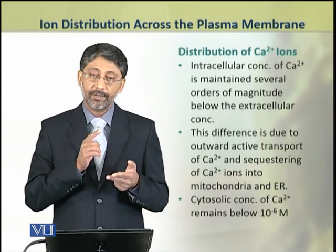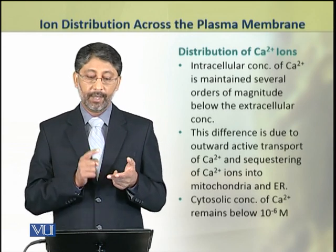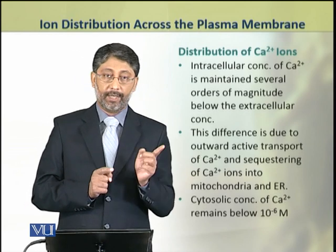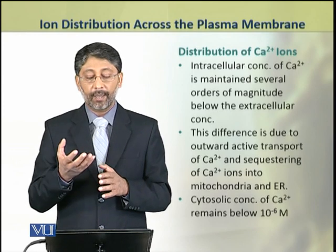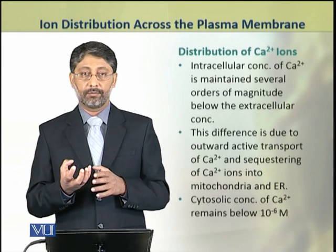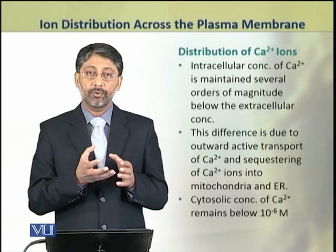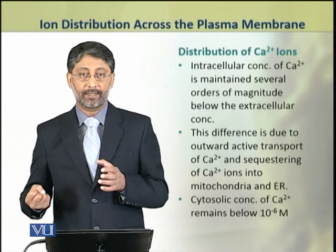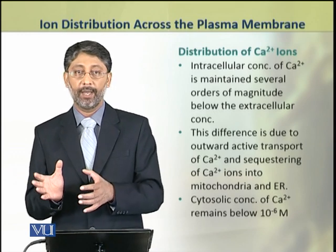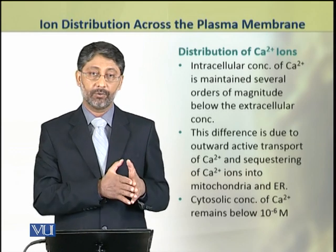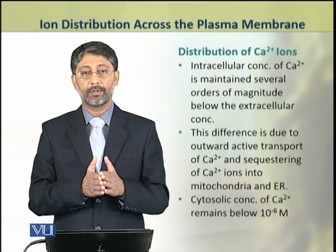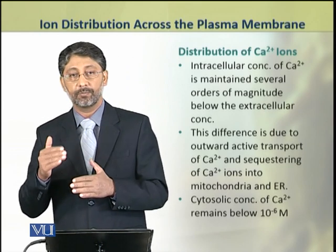This difference is due to major factors. First, calcium ions are actively transported out of the cell. The other factor is that mitochondria and endoplasmic reticulum sequester calcium ions from the cytoplasm. This is why calcium ion concentration in these two organelles is high, but in the cytoplasm it is kept very low — generally below 10 raised to power minus 6 mol.